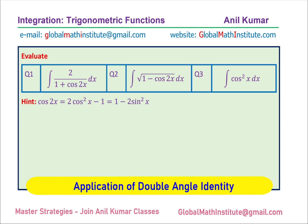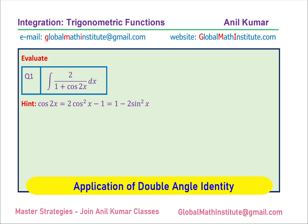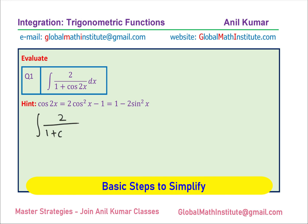Let's begin with the very first one: we need to integrate 2 over 1 plus cos2x dx. Now, cos2x equals 2cos²x minus 1, and therefore we replace it accordingly. So we have 2 over 1 plus 2cos²x minus 1 dx.